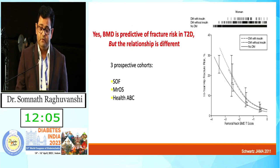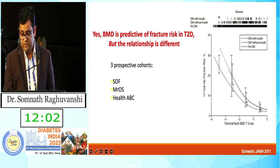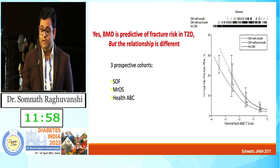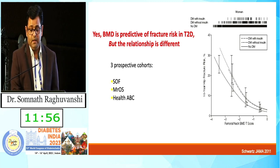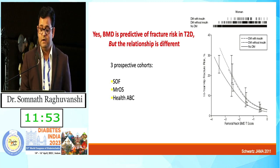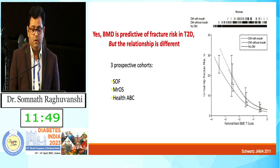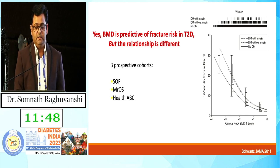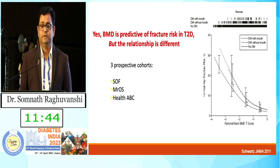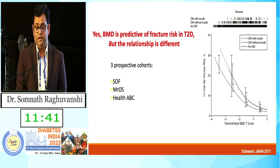From different studies we can see that patients with type 2 diabetes have higher fracture risk at a similar T-score. As T-score increases, osteoporosis risk increases, fracture increases, and those on insulin have higher fracture risk compared to those not taking insulin or oral hypoglycemic agents.